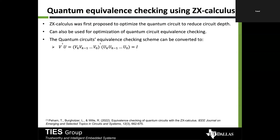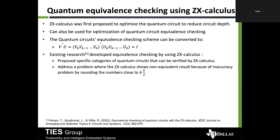ZX calculus was first proposed to optimize quantum circuits and reduce circuit depth. This calculus represents quantum circuit gates using Z or X nodes, which are then connected, and algebraic operations reduce the overall state. ZX calculus can also be used for quantum equivalence checking: given two circuits V and U, you take the transpose of V and multiply it with U, then prove that the output is an identity matrix.